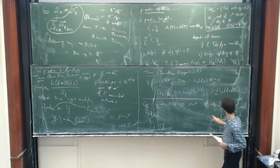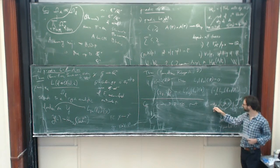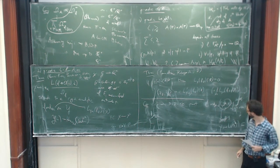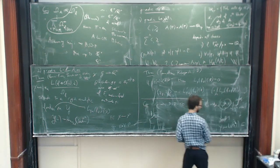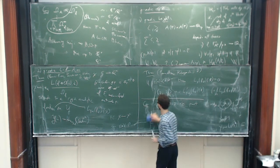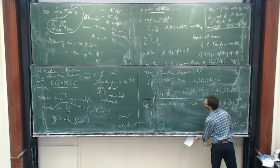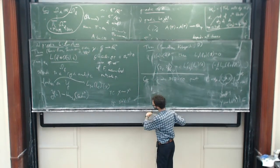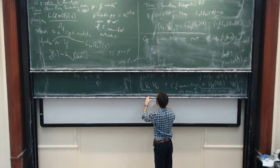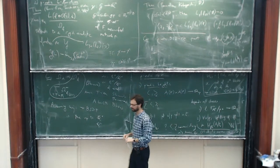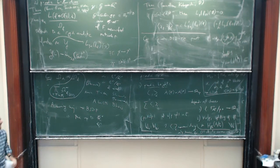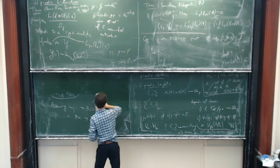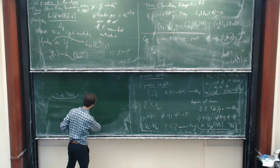The p-adic BSD formula says the order of vanishing — when p does not divide the conductor — equals the rank of A. Assuming the period conjecture, you get a p-adic BSD formula up to a rational number. The interest of this formula is that you can use it to relate the classical and p-adic versions of the Gross-Zagier formula.